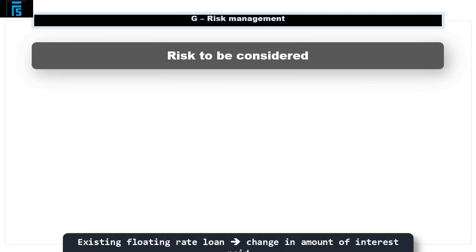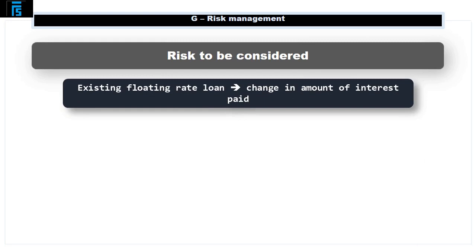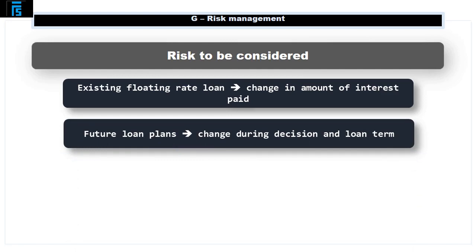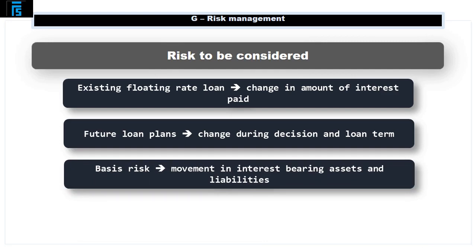1. If an existing loan has a variable or floating rate of interest, this can lead to the amount of interest paid changing throughout the period of the loan. 2. If a company is planning to take out a loan in the future, even if this is at a fixed rate, the interest rate and therefore the profit impact can change between the decision and the loan starting. 3. Interest bearing assets and liabilities may not move in line with each other. This is known as basis risk.